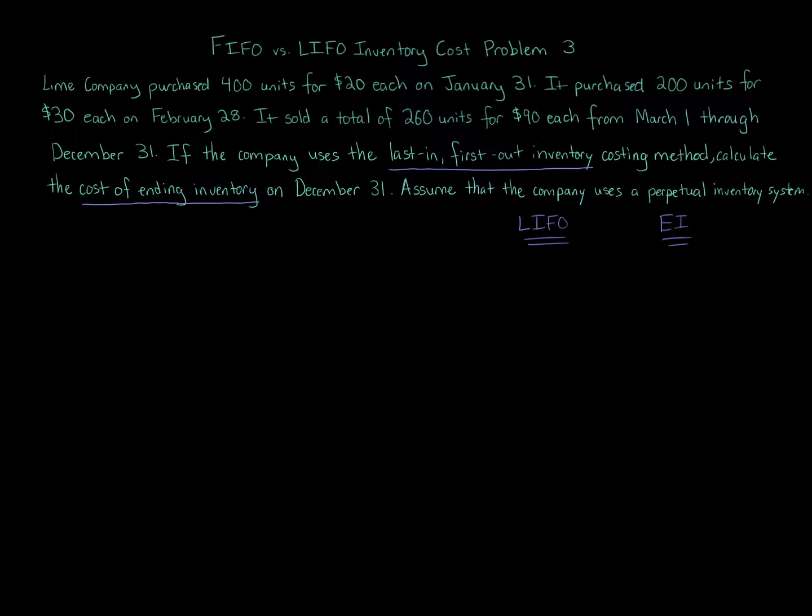We're told on January 31st, which is our first layer. So January 31st, the company, Lime Company purchased 400 units at $20 each. I'm just putting in total amounts. You don't have to do the totals. Actually, let's erase it. I don't like to do the totals just because you don't need them. We don't need the totals. We just need the 400 at $20. That's the important part.